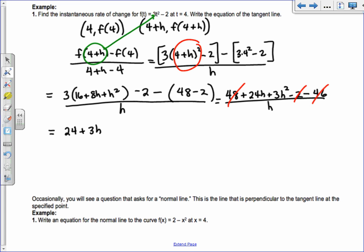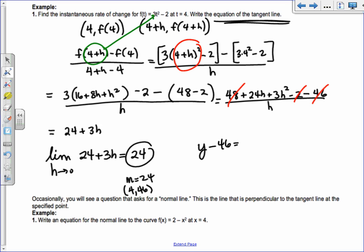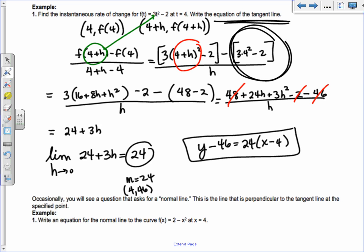You end up with 24 + 3h. Now taking the limit as h goes to 0, as the two points get so close they're indistinguishable, the limit as h goes to 0 of 24 + 3h equals 24. That is the slope at exactly 4. So your equation of your tangent line is y - 46 = 24(x - 4), where I got 46 by plugging 4 into the original equation.